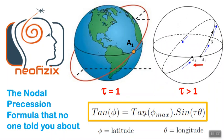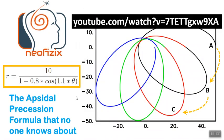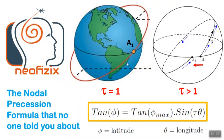Apsidal precession happens in the plane of revolution itself, but in nodal precession the plane of revolution itself is getting displaced. If there was no precession, the object starting from point A1 would get back to the same point A1 after one revolution, but with nodal precession the object may end up to the left or to the right of point A1. Basically, nodal precession is an interplay between the longitudinal and the latitudinal angles.